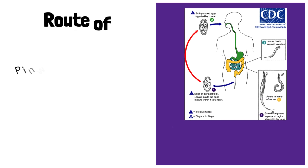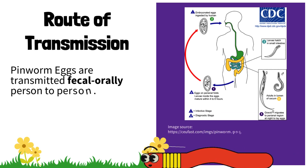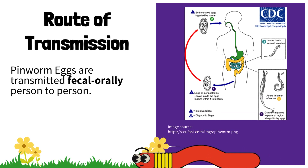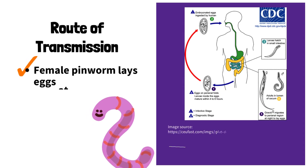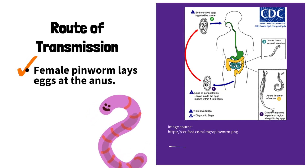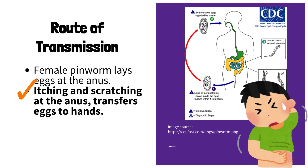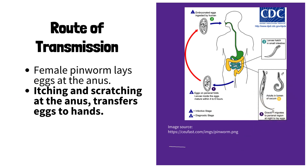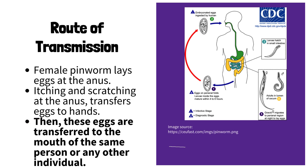Route of transmission: pinworm eggs are transmitted fecal-orally from person to person. Firstly, the female pinworm lays eggs at the anus. Itching and scratching at the anus transfers eggs to the hands. Then these eggs are transferred to the mouth of the same person or any other individual.